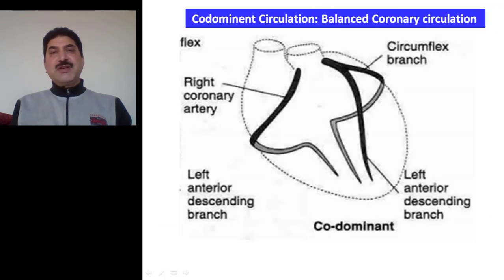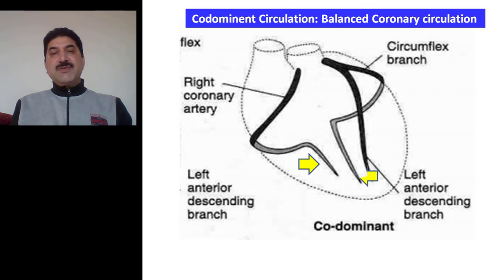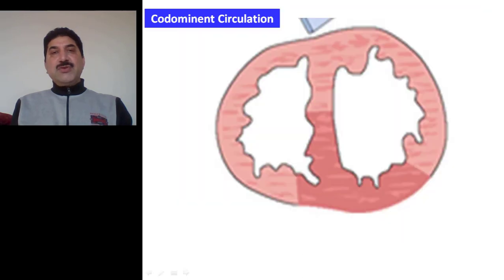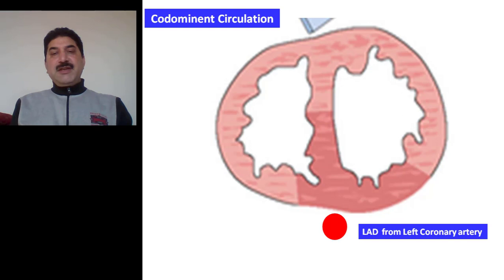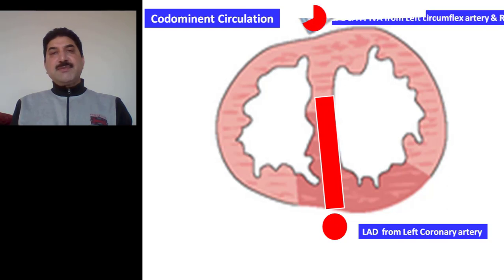What is co-dominant circulation? Co-dominant circulation is also called balanced coronary circulation. In this type of circulation, there are two small posterior interventricular branches — one arising from the right coronary artery and the second arising from the left coronary artery. In co-dominant circulation, the left anterior descending artery gives septal branches that supply the anterior two thirds of the septum. The posterior one third of the septum is supplied by two vessels, one arising from the left coronary artery and the other from the right coronary artery.